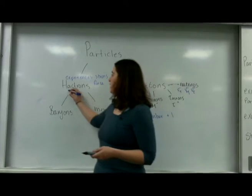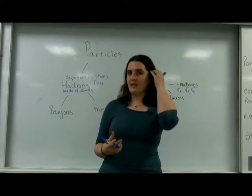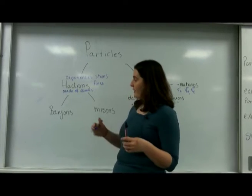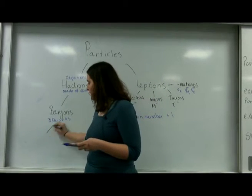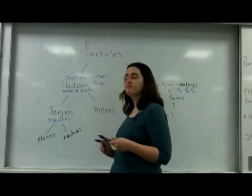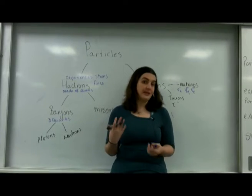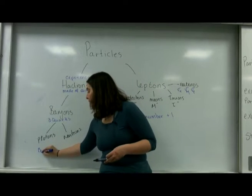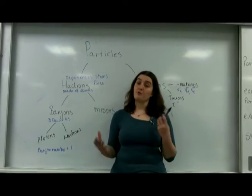Hadrons experience the strong force and they're also made of quarks — I'll talk more about quarks in another video. Baryons are a special type of hadron, and baryons have three quarks. The baryons you need to know are protons and neutrons. The exam board may make up other ones with a different selection of quarks, but protons and neutrons are the ones you actually have to know. These all have a baryon number of plus one, which will make sense when we talk about conservation later.